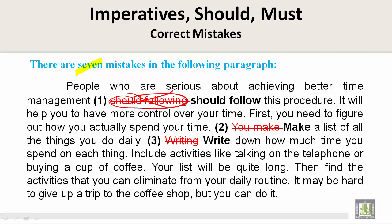First, you need to figure out how you actually spend your time. Make a list of all the things you do daily. Write down how much time you spend on each thing. Include activities like talking on the telephone or buying a cup of coffee. Your list will be quite long. Then find the activities that you can eliminate from your daily routine. It may be hard to give up a trip to the coffee shop, but you can do it.